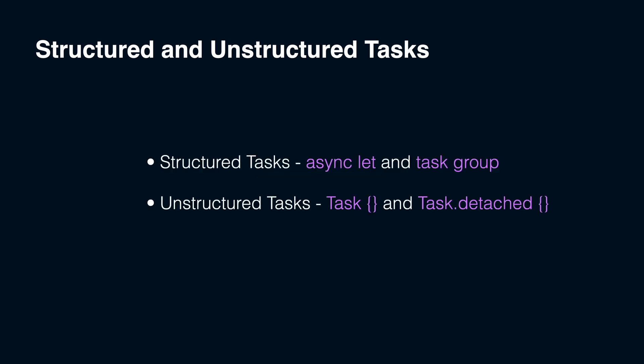In terms of structured concurrency, there are two kinds of tasks: structured concurrency tasks, or simply structured tasks, represented by async let and task group; and unstructured concurrency tasks, or simply unstructured tasks, represented by regular unstructured task and detached task. What is the difference between structured and unstructured tasks? Why are they actually called structured and unstructured? What does it mean?